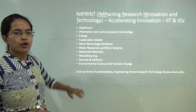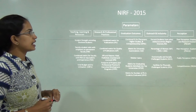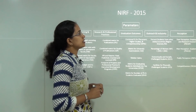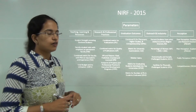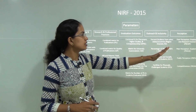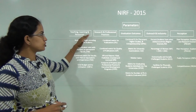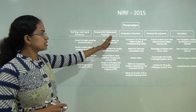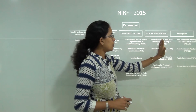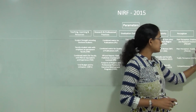IMPRINT is important for this year's examination. Next is NIRF, the National Institutional Ranking Framework, released in 2015. It focuses on five major parameters: teaching, learning and resources; research and professional practices; graduation outcomes; outreach and inclusivity; and finally perception — including peer perception and public perception. These are the five parameters based on which ranking is provided to institutions.